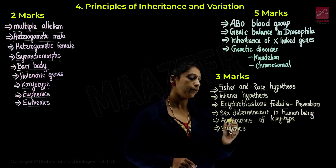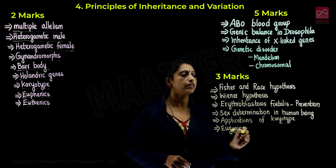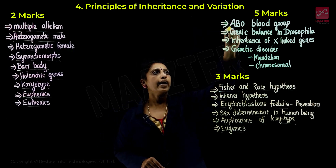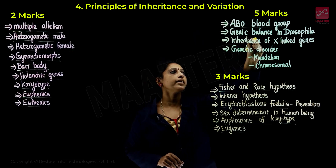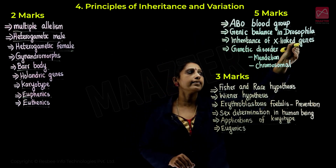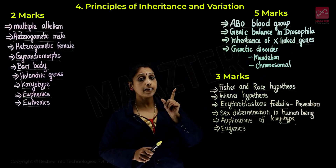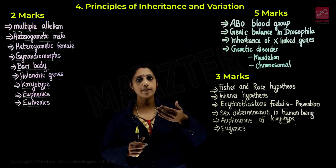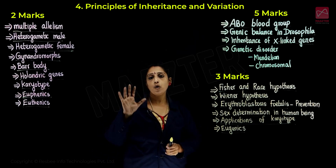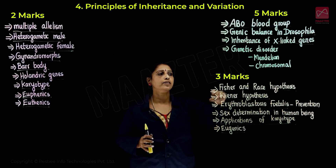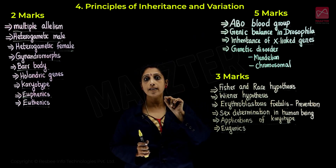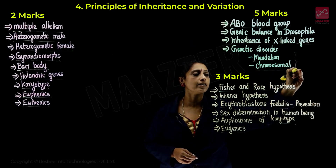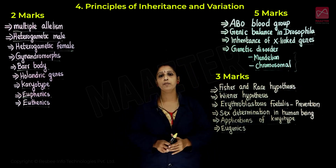Further topics include sex determination in human beings, applications of karyotype, and eugenics — both positive eugenics and negative eugenics. Five more questions cover ABO blood group, genic balance in Drosophila, and inheritance of X-linked genes. Very important questions involve crossing: marriage between colorblind male and normal female, and colorblind female and normal male. Genetic disorders include Mendelian disorders and chromosomal abnormalities — two important sections.